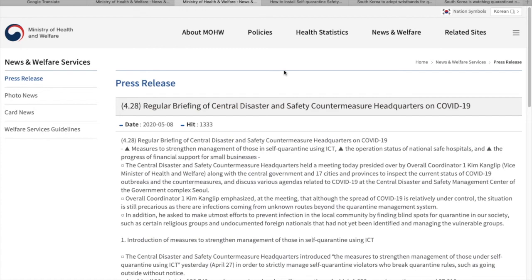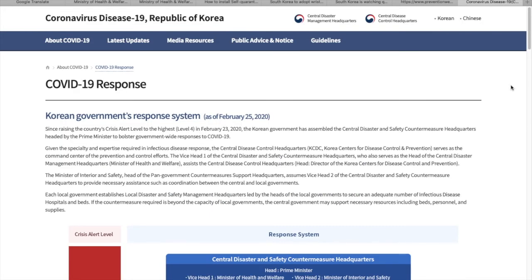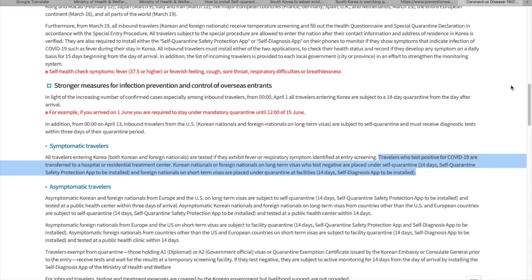This is an example of regular briefing that is published by the Ministry of Health and Welfare. This regular briefing provides information such as the introduction of the wristband which is called SafeBand and the new motion detection function which is added to the Self-Quarantine Safety Protection app. Here is an example of an article that is published by the government body such as the Ministry of Health and Welfare, which discusses Korean government response system. This article provides information such as all travelers that enter Korea from overseas have to be tested for COVID-19, and for those who tested negative, especially Korean citizens and foreigners with long-stay visas, have to do self-quarantine for 14 days and install Self-Quarantine Safety Protection app.